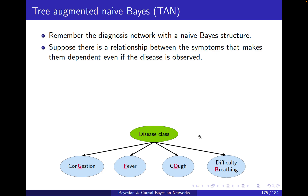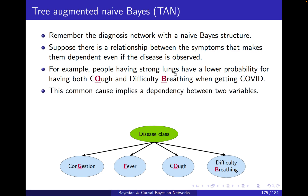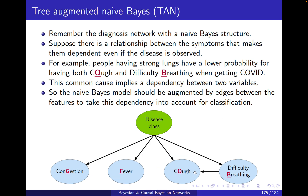Now, imagine that assumption is not correct — it was a naive assumption. For example, people having strong lungs have a lower probability of having both cough and difficulty breathing when getting COVID. This strong lung is a common cause, which implies a dependency between the two variables, and this dependency can be shown with an extra link between the two symptoms. The Naive Bayes model should be augmented by edges between the features to take this dependency into account for classification.